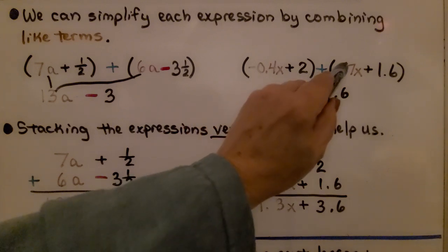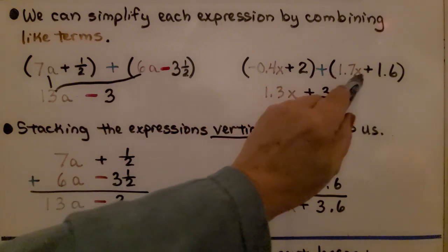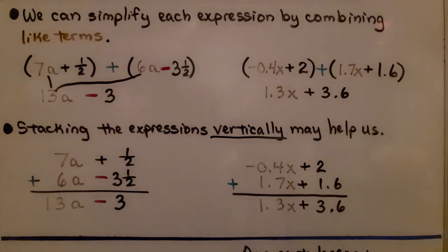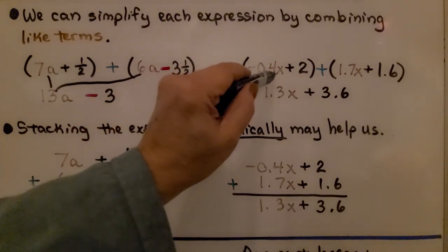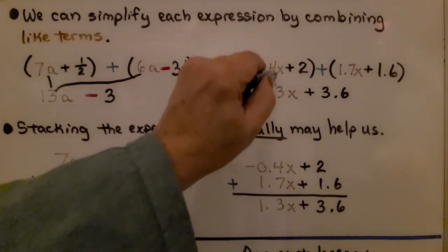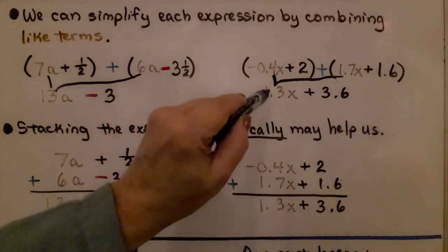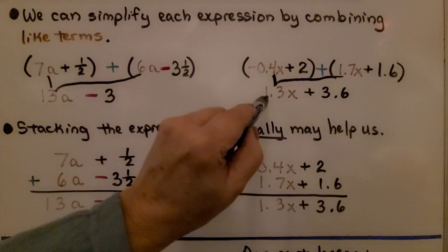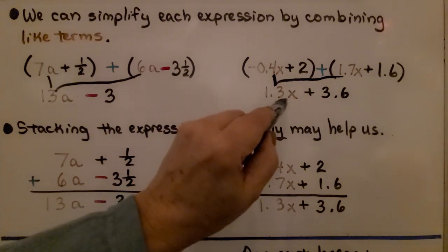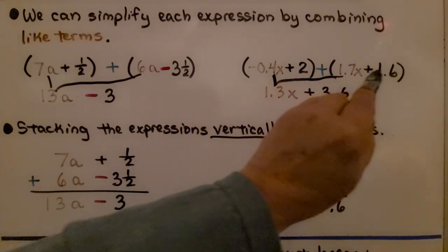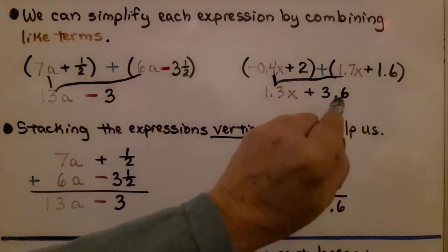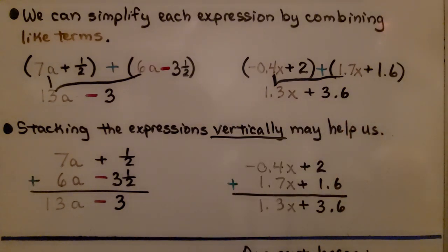Here we have negative 4 tenths x plus 2. And we're adding it to 1 and 7 tenths x plus 1 and 6 tenths. We have negative 4 tenths x added to 1 and 7 tenths x. That's going to give us a positive 1 and 3 tenths x. We have a positive 2 plus a positive 1 and 6 tenths. That gives us a positive 3 and 6 tenths.